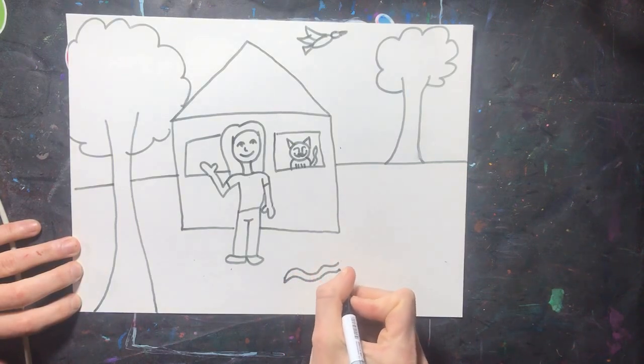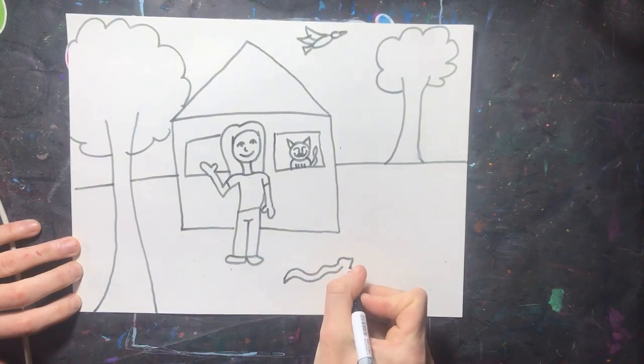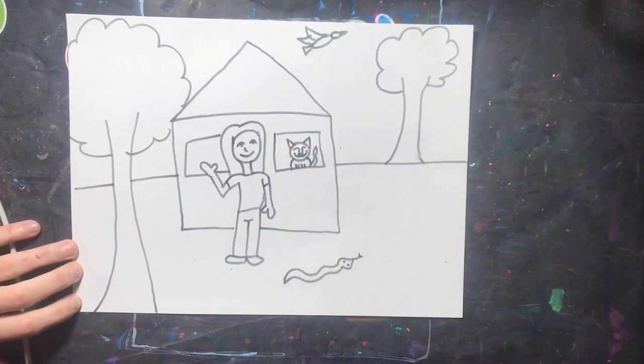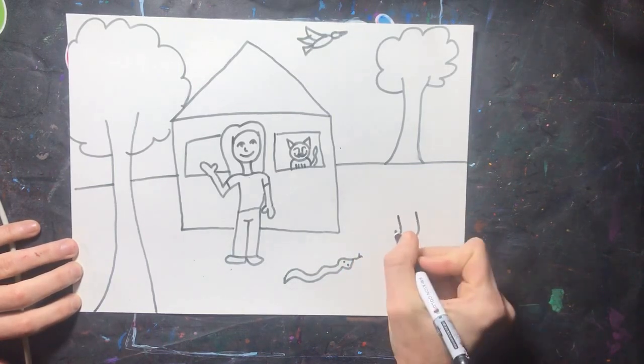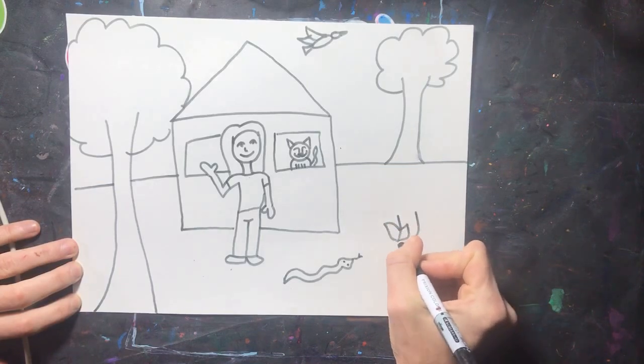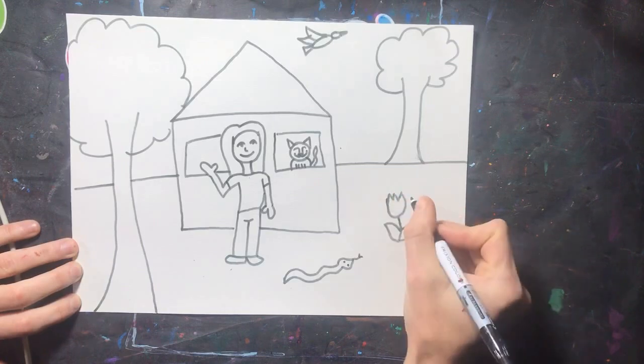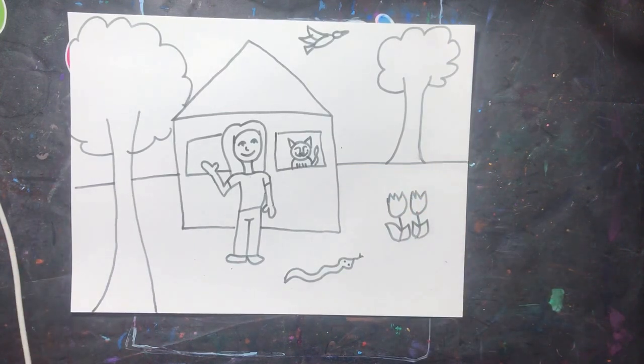And then something below the house, anything you might find on the ground: animals, rocks, more people. It's up to you. Once you finish something above and below, we're going to draw two flowers that are side by side, at the same height, looking like they're right next to each other.